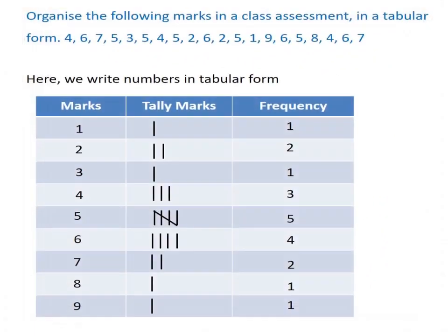Now we will see an example of tally marks. Organize the following marks from a class assessment in tabular form. We make a table with columns: marks, tally marks, and frequency. First we find the smallest number, which is one, and the largest, which is nine. So we write marks from one to nine.